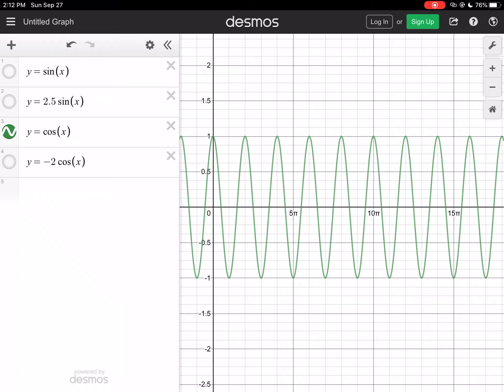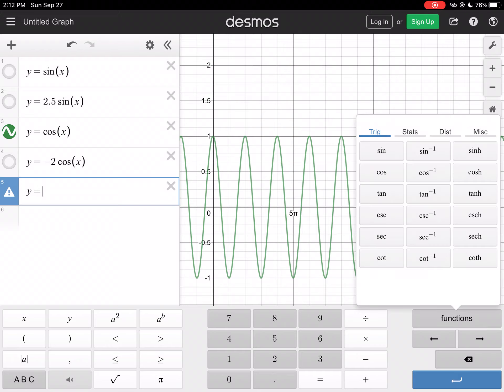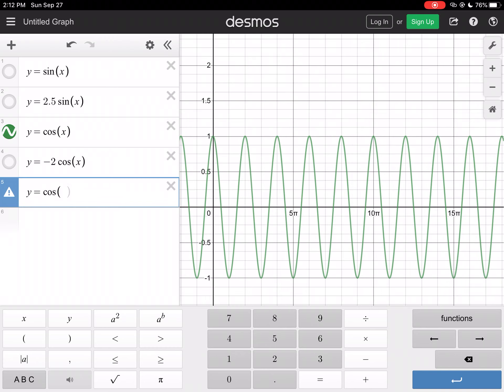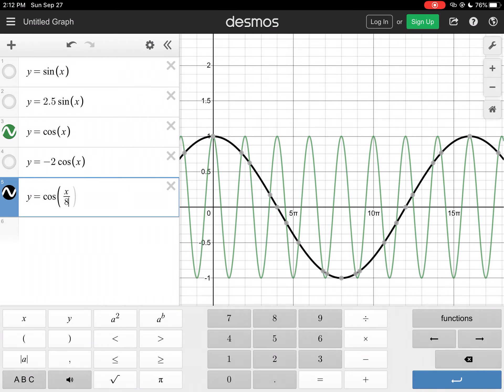Now let's type in, in a different color, we'll go y—by the way, you can go g(x), I just like y. Y equals cosine, so I have to put my function key, cosine, and then in parentheses I'm going to go x divided by 8. There you can see there is one period of your graph.